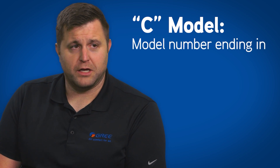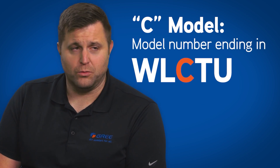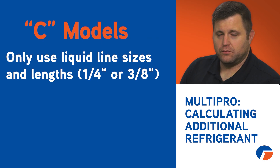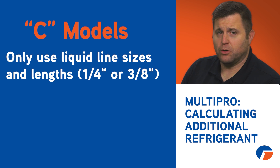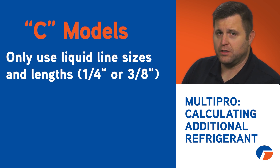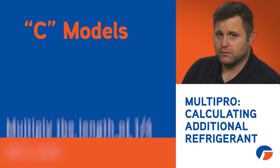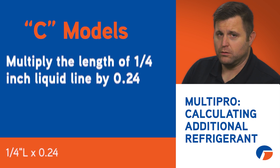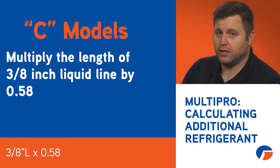For C models, as indicated by outdoor models ending in WLCTU, you'll calculate the additional refrigerant charge by doing the following. You're only going to be using the liquid line sizes and lengths, so this will only be either quarter or three-eighths. You'll start by multiplying the length of quarter-inch liquid line by 0.24, then multiply the length of three-eighths liquid line by 0.58.